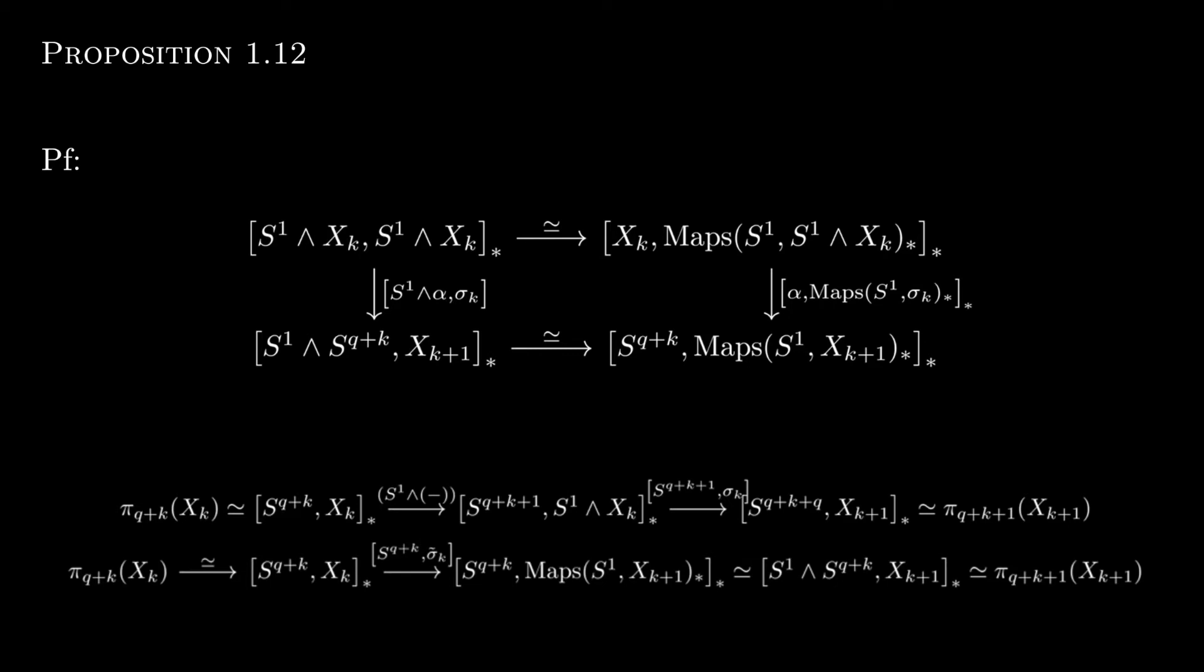We can think about the identity in the top left, the identity map from S^1 smash X_k to S^1 smash X_k. If we move down to the bottom left, we get a map from S^1 smash S^q+k to X_k+1. This is the first structure map. If we instead take the identity map to the right and then down to the bottom right, we get the adjunct structure map. It then follows that these are isomorphic by that bottom isomorphism.